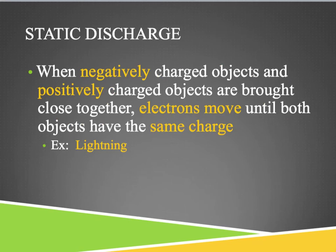When negatively charged objects and positively charged objects are brought close together, the electrons are able to move back and forth between those objects until both end up neutralizing — they end up having the same charge, so they even out on both sides. This is how lightning works. Lightning is a buildup of static electricity in the clouds with the molecules, and eventually that sudden shock is the discharge — the charges finally have somewhere to go.